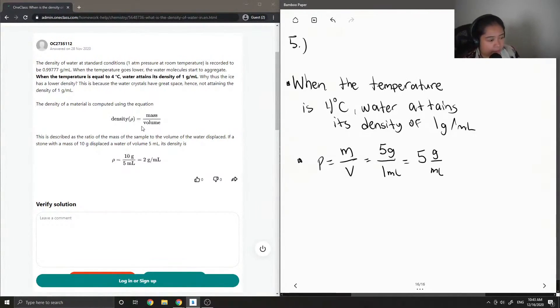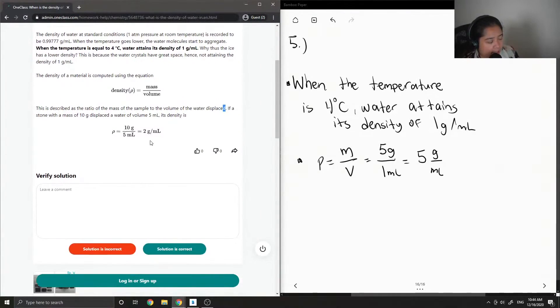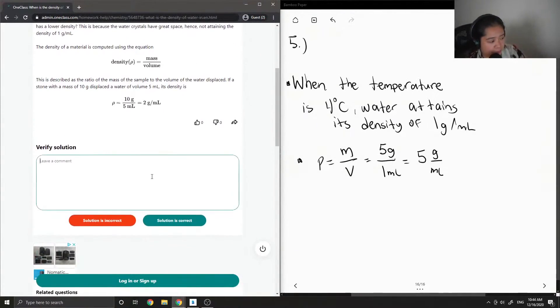Okay, so they have density equals mass over volume. This is described as the ratio of the mass of the sample to the volume of the water displaced. If a stone with a mass of 10 grams displaced a water of volume 5 mils, its density is 10 divided by 5, which is 2 grams per mill.